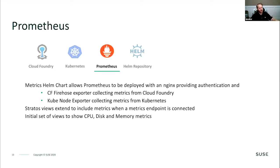Another addition is Prometheus and Grafana for metrics gathering throughout the entire cluster. It actually runs on all of your nodes, doing metrics gathering and logging, and exports all those logs into Cloud Foundry — both for Kubernetes and for Cloud Foundry running on top of the Kubernetes infrastructure. All the Stratos views — both Cloud Foundry and Kubernetes metrics gathered there — are extended and connected with the Prometheus metrics endpoint set up within Stratos.